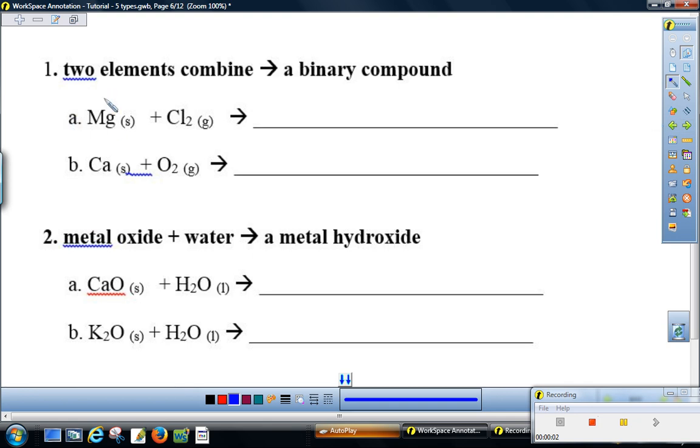If we have two elements on the left side, the only thing they can do is combine to form a binary compound, a compound made of two elements. Magnesium wants to become plus two, chlorine wants to become minus one, so we get magnesium chloride, MgCl2, forming. This is a simple one to one to one ratio.